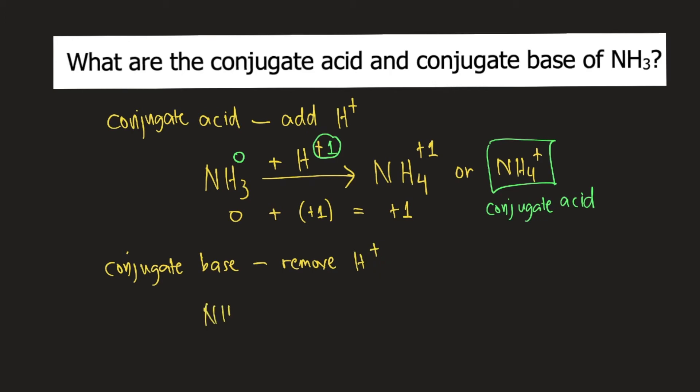So we have NH3. You take away H+, so minus H+. So when you remove hydrogen from NH3, NH3 becomes NH2.